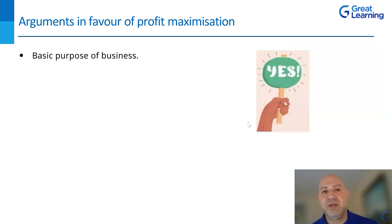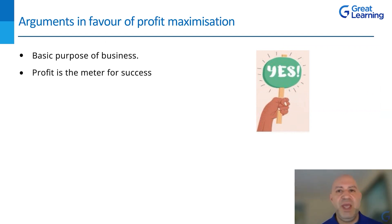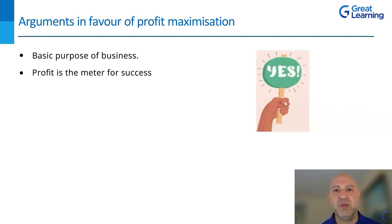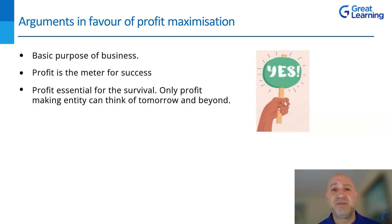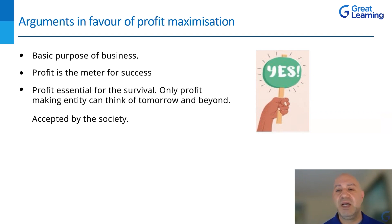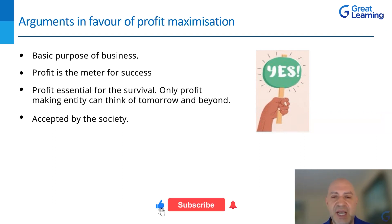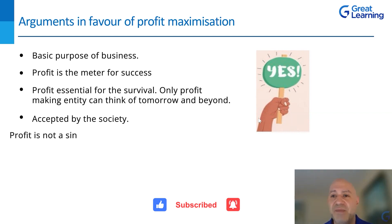Arguments in favor of profit maximization: the basic purpose of your business — if you deviate from that, you're going to have a different model which could sacrifice expected profits. Profit is a meter for success — the more you make, the more successful you are. Profit is essential for survival — only a profit-making entity can think of tomorrow and beyond. If you're not making profits, you're not going to be around for a long period of time. Even if you have capital to invest in your business for one, two, or three years, that could be depleted without maximizing profit. This is accepted by society because in business, your goal is to make money.